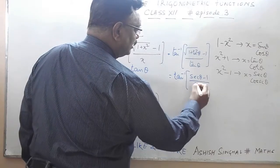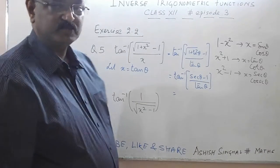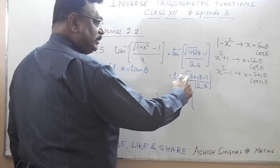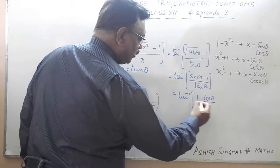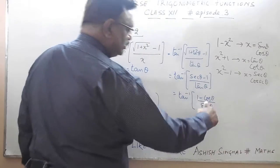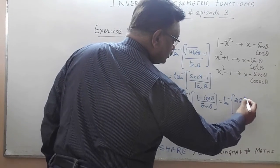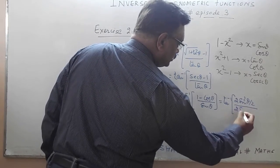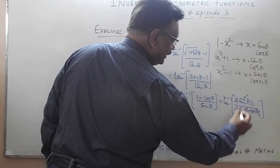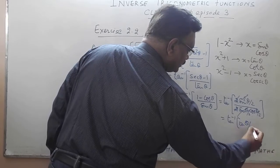Converting to sine and cosine: sec θ = 1/cos θ, so the numerator becomes (1 − cos θ)/cos θ and tan θ = sin θ/cos θ. Both cos θ terms cancel, giving tan inverse of (1 − cos θ)/sin θ. Using half-angle identities, 1 − cos θ = 2sin²(θ/2) and sin θ = 2sin(θ/2)cos(θ/2), which simplifies to tan inverse of tan(θ/2).